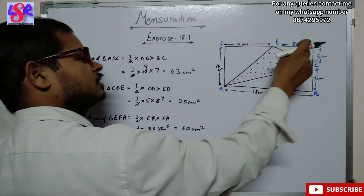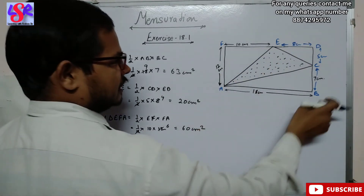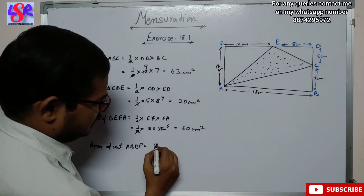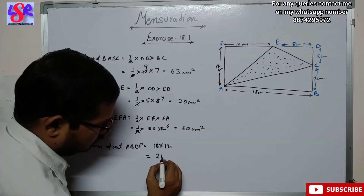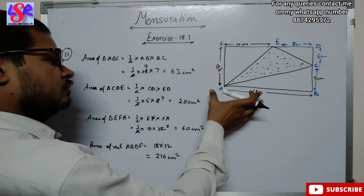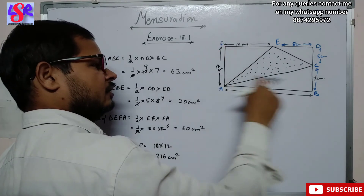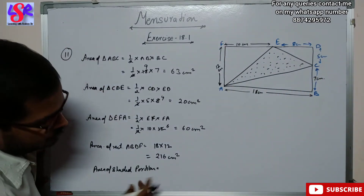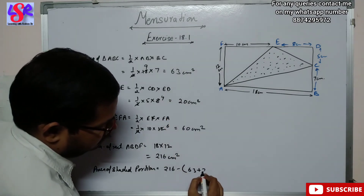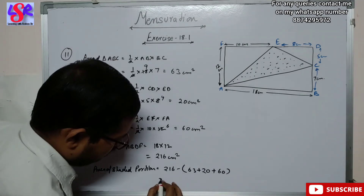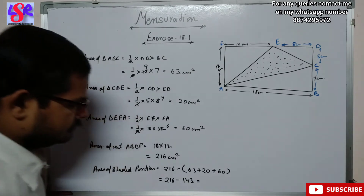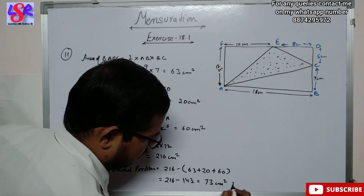We have calculated all three areas. The area of rectangle ABDF equals 18 into 12, which is 216 centimeter square. To get the area of the shaded portion we subtract the three triangles: area of shaded portion equals 216 minus (63 plus 20 plus 60), which is 216 minus 143, giving 73 centimeter square.